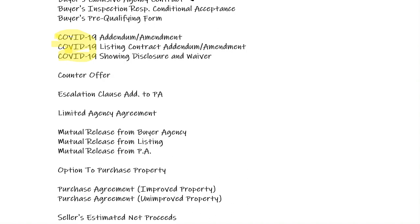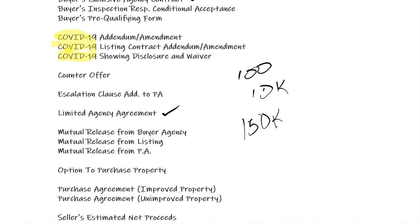Obviously there's the counteroffer, the escalation clause — and remember, an escalation clause means you put an offer in and it will increase until you reach your top number. It's sort of a lazy man's way to do a quick auction: it goes 110, 120, 130, 140. The limited agency agreement is obviously a form you would use. There is the mutual release we talked about — we've got one for the buyer, one for the seller, and one between buyer and seller from the purchase agreement.